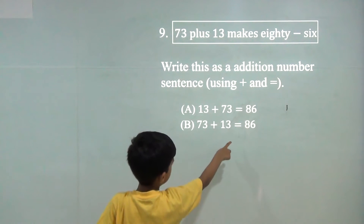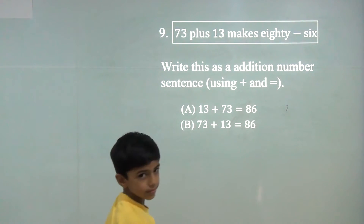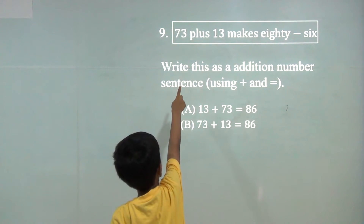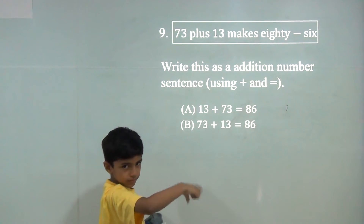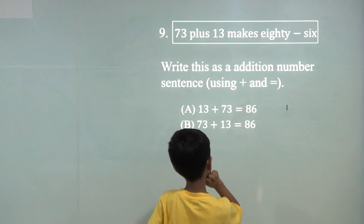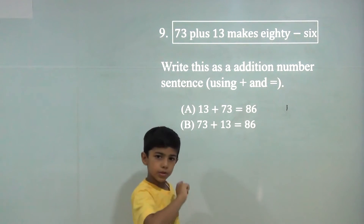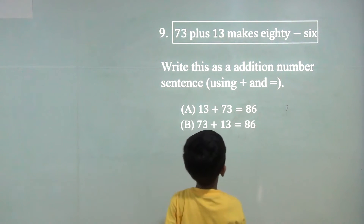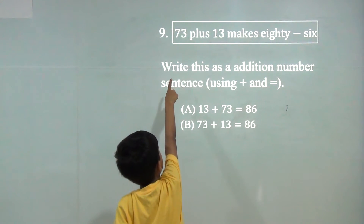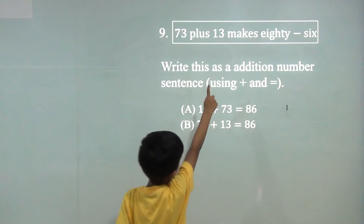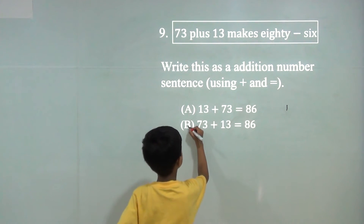73 plus 13 is 86. Here the equation is 73 plus 13. So we can change it. The number answer would be 7, but there is given 73. So 73 minus 13 makes 86. So the answer would be B.